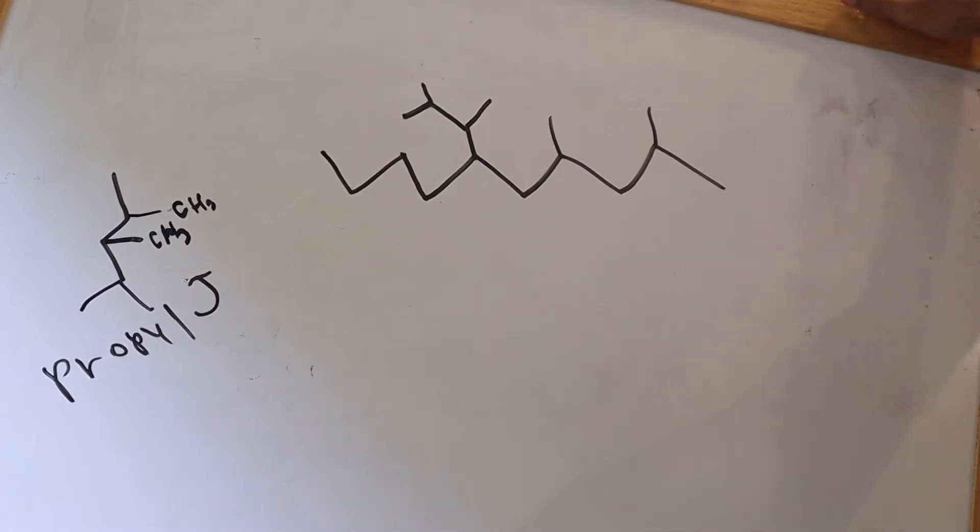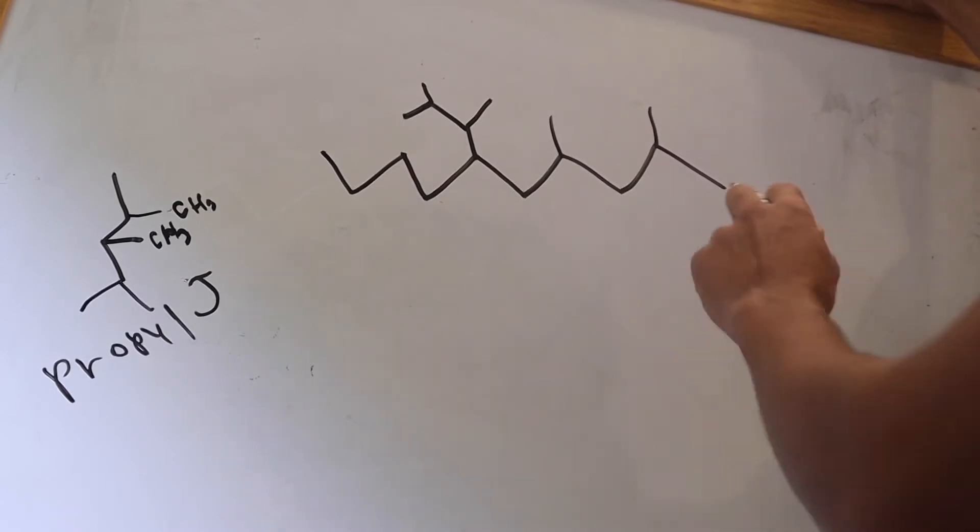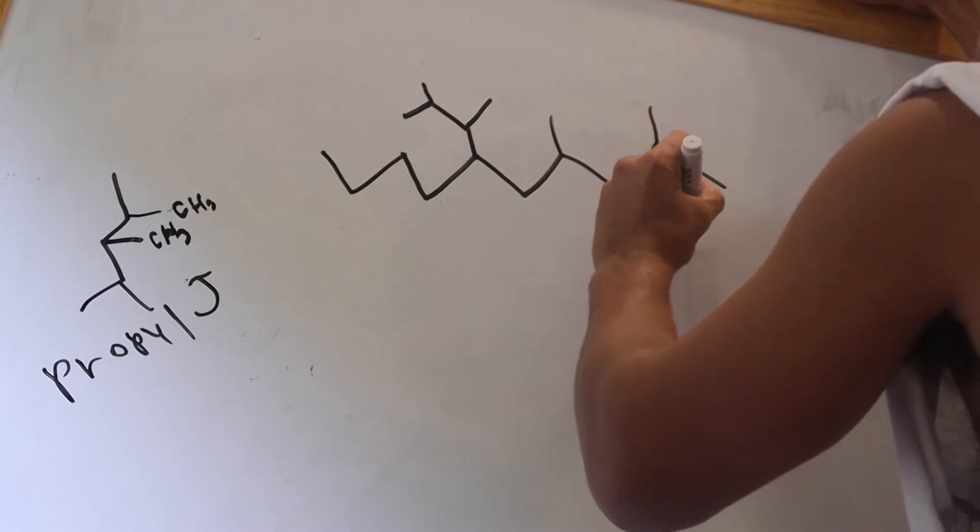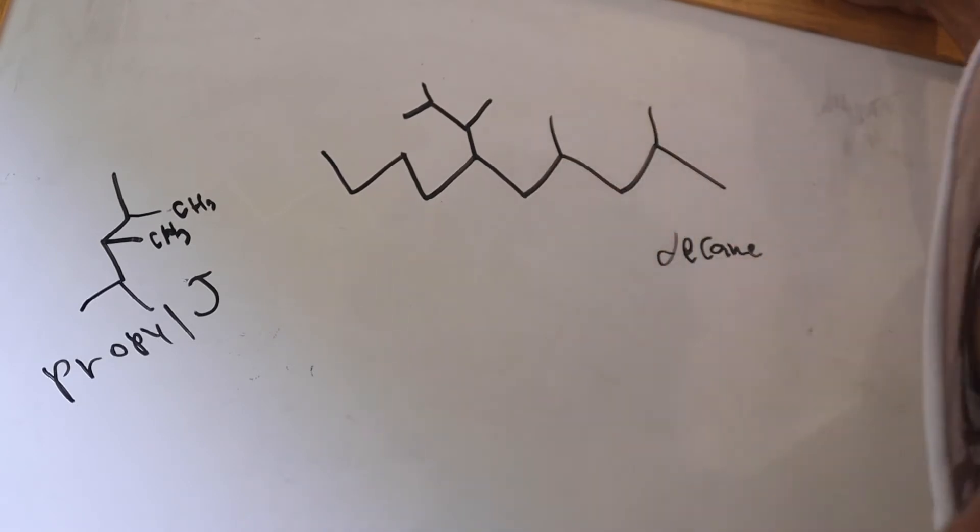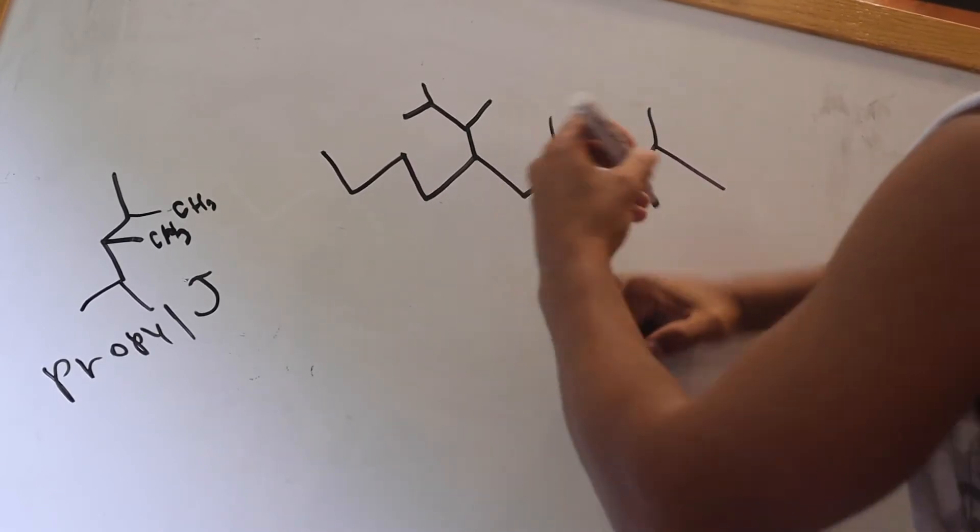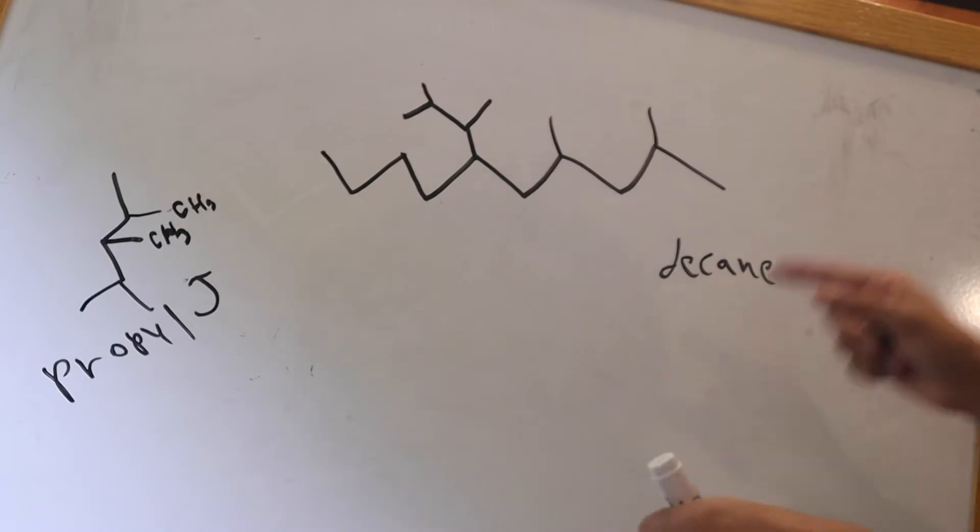But here's the thing, you want to start numbering this in a way where you're going to start naming in alphabetical order. But we know now the end of the name, because there's 10 carbons, is going to be decane. So it's going to be decane at the end of the name.